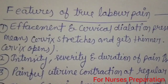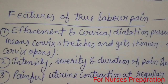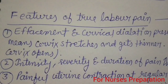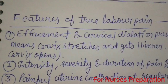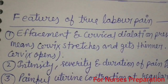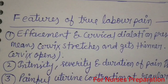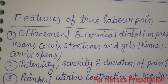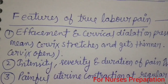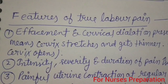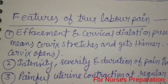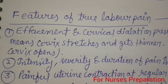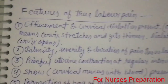During the time of delivery, a woman suffers with True Labour Pain and sometimes with False Labour Pain. We have to differentiate whether the pain is true or false. If she is suffering with True Labour Pain, it means she needs medical assistance or needs to be shifted to the hospital, because this is the time of delivery. So let's begin all the points.